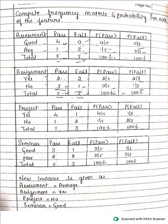For the project attribute, we also have two categories: yes and no. The likelihood probability for yes on pass is 4 by 5, yes on fail is 1 by 3, no on pass is 1 by 5, and no on fail is 2 by 3. Put 100% in the total row.